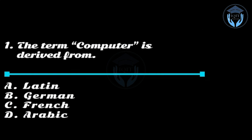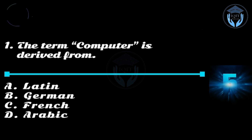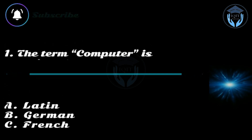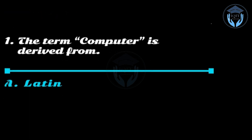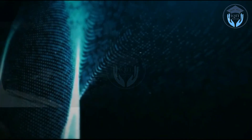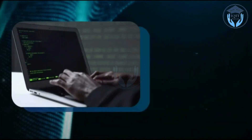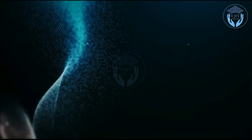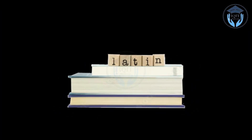Question one: The term 'computer' is derived from — option A: Latin, option B: German, option C: French, option D: Arabic. Answer: option A, Latin. The term computer is derived from the Latin language — from a Latin word 'computare' which means to calculate, to sum up, or to think together. So the word computer means a device that performs computation.